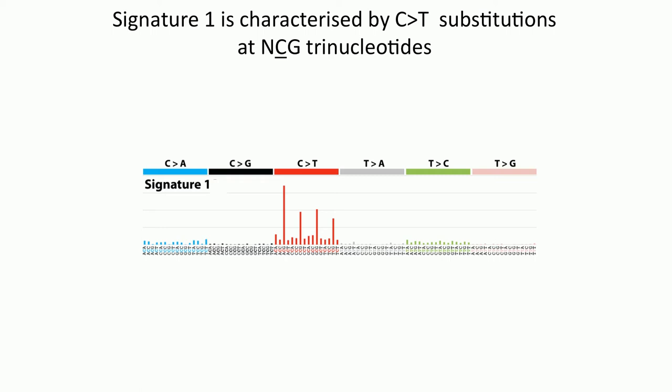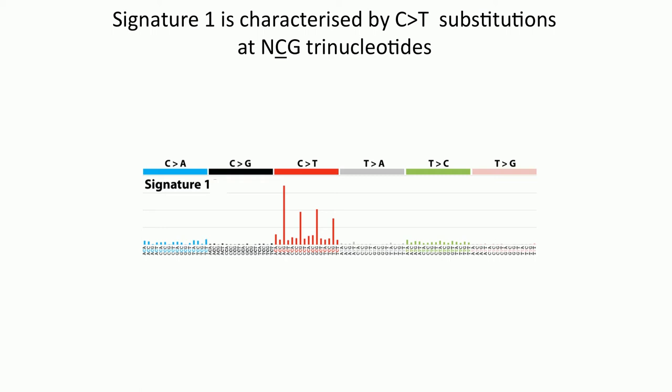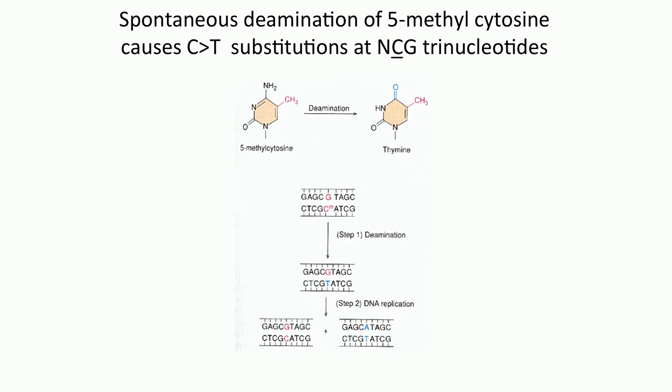Signature 1 is very characteristic — it has C2T mutations occurring at CpG dinucleotides or NCpG trinucleotides. The mutational process underlying this pattern is the deamination of 5-methylcytosine, which causes C2T substitutions at CpG dinucleotides: the 5-methylcytosine undergoes deamination, and after replication you get a C2T mutation at CpG. This deamination may not be spontaneous — it could be enzymatic — but there will be deamination of 5-methylcytosine.